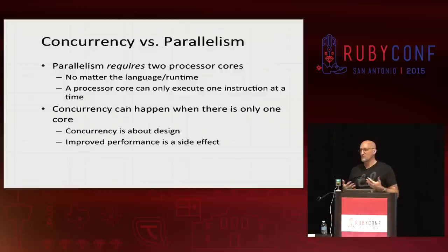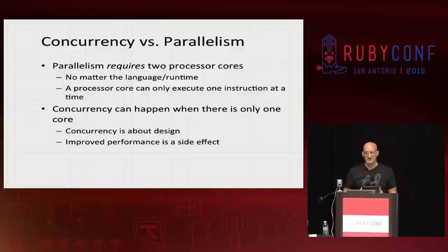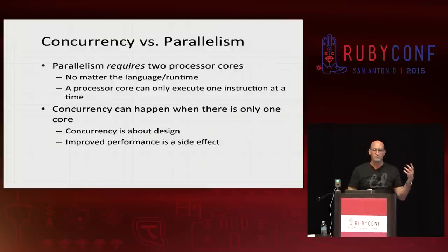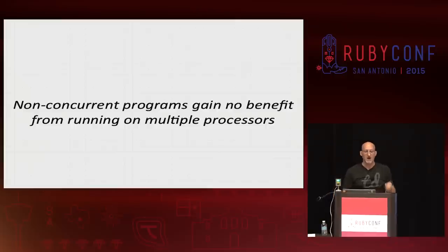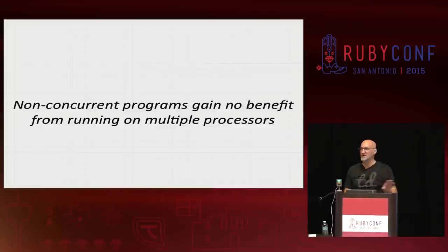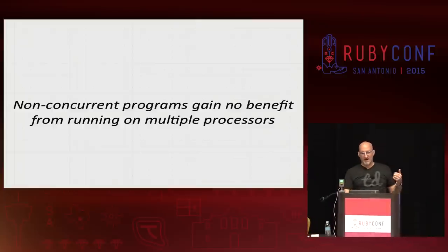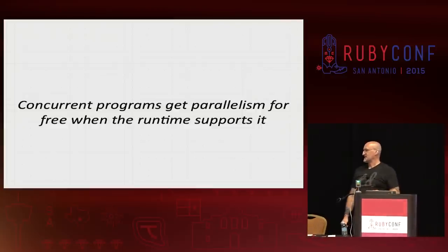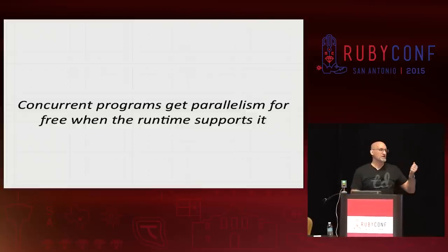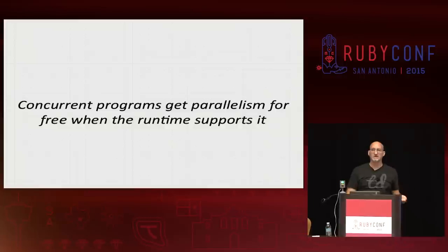Concurrency is about dealing with lots of things at once — we did that, we set up 20 futures. Parallelism is about doing lots of things at once. To put it in my terms: parallelism requires two processor cores. If I only have one processor core, I cannot do parallelism, because a processor can only handle one instruction at a time. However, concurrency can be done on one or more processor cores. Concurrency is really about design — designing your program around independently executing things that don't have to be serialized. If you get improved performance, that's a side effect — a good, desirable side effect, but a side effect. Non-concurrent programs gain no benefit from running on multiple processors. If I write my programs concurrently, at worst I get no benefit; at best I get a huge benefit.